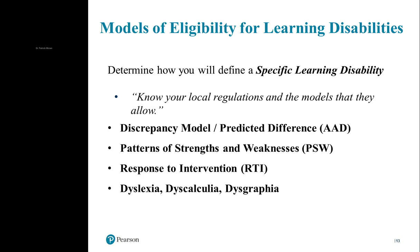There are models for determining eligibility that are very important for clinical psychologists to know about. How will you define a specific learning disability? This is the largest category of eligibility in schools — upwards of 85% of kids who have an IEP have what is called a specific learning disability in reading, writing, or math. It's important to know locally what your state's regulations are. The first and oldest model was the discrepancy model, which looked at the predicted difference between someone's ability — measured by an IQ test — and their achievement.